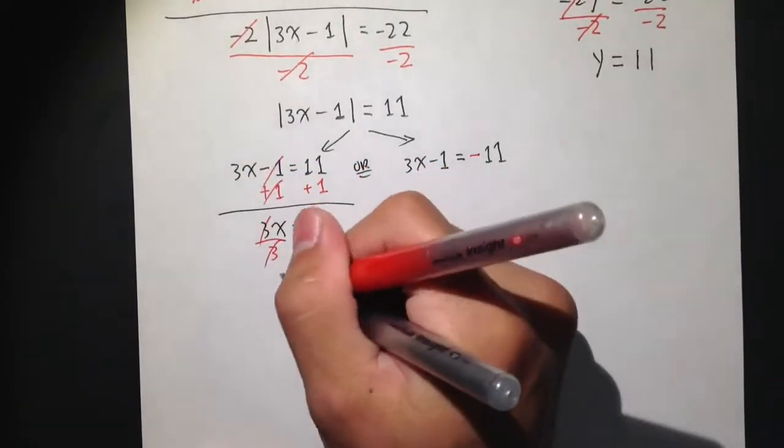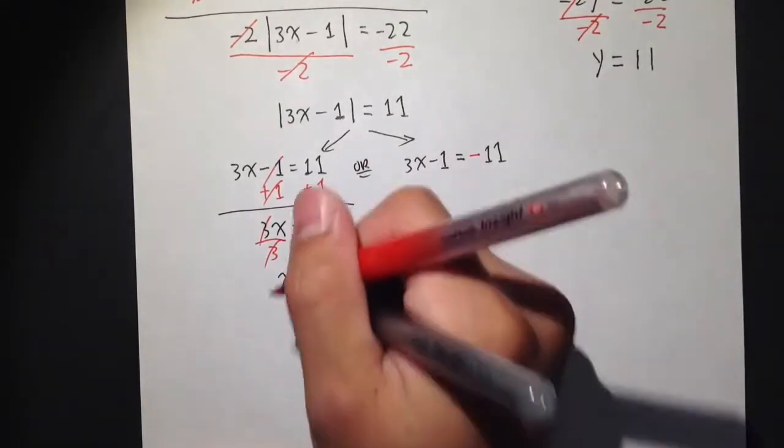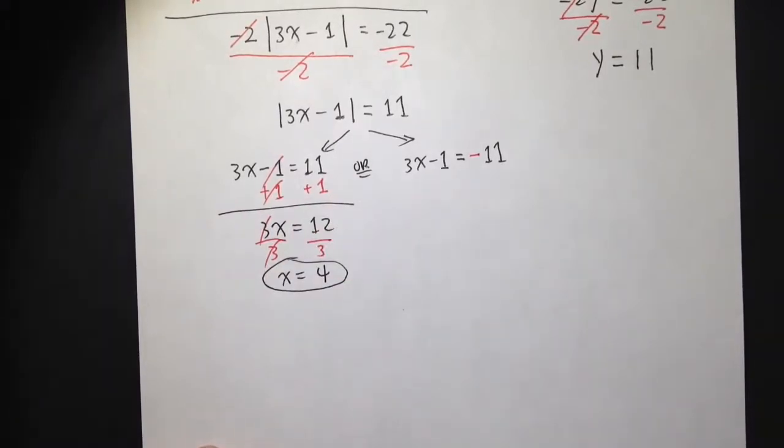And we have x is equal to 12 over 3, which is equal to 4. So this is my first answer, the first solution.